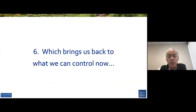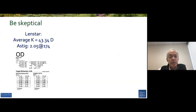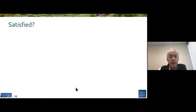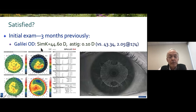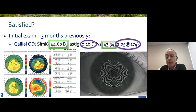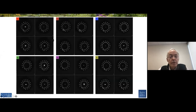That brings us back to what we can control today in our practices. Here's a patient of mine who came in on the pre-op visit: Ks are 43.34, astigmatism two diopters against the rule. We didn't get any Ks with the IOL Master, and looking at the data there's a missing LED mire in the lower quadrant. This patient had seen me three months preoperatively and the Ks were 44.6 with the Galilei, as opposed to the 43.34 on the day of the pre-op visit. The astigmatism was a tenth of a diopter with the Galilei as opposed to over two diopters with the Lenstar.